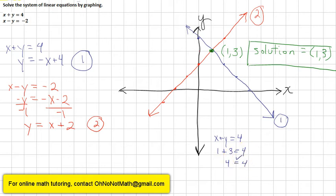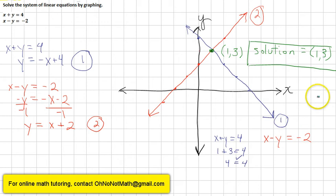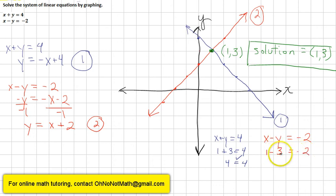Now the second equation: x minus y equals negative 2. Substituting x equals 1 and y equals 3: 1 minus 3 equals negative 2, which equals negative 2. That checks out as well, so our solution is correct.